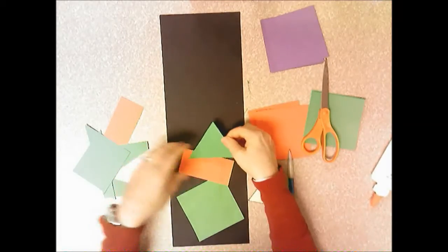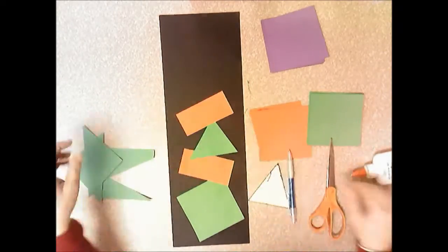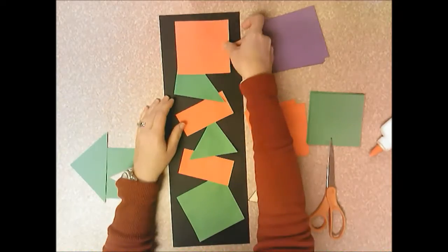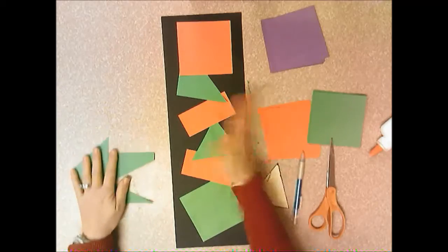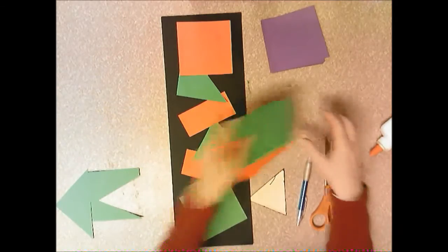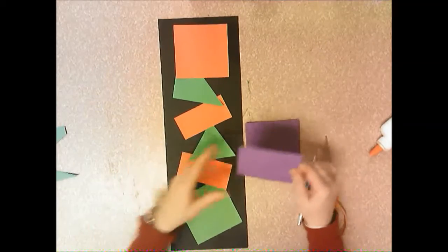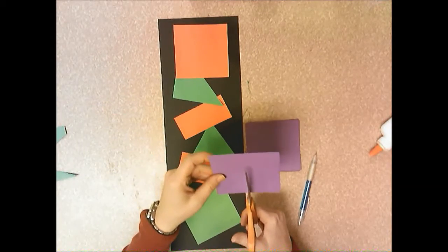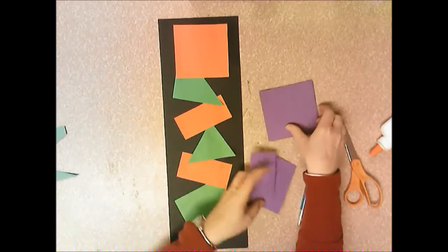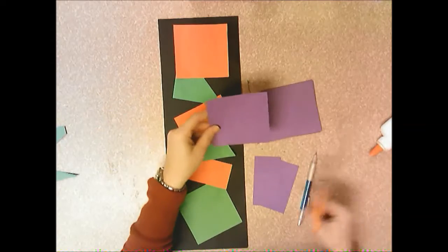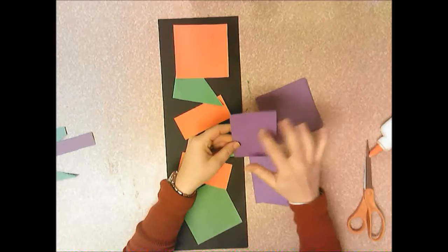So you're going to alternate the two colors that you're using in the background. And the shapes are going to overlap and touch. But I don't want them to hang off either side of the black paper. And so now from your purple paper, I want you to cut a rectangle. And these are two skinny rectangles. You could cut a slightly fatter one if you'd rather do that. So you cut just a little bit of a square off. And this will just be scrap. But you'd use the bigger square.